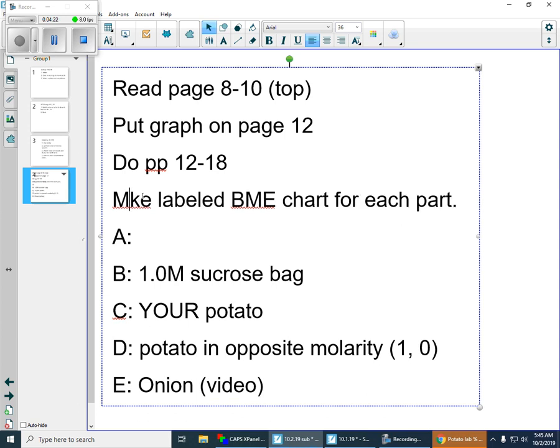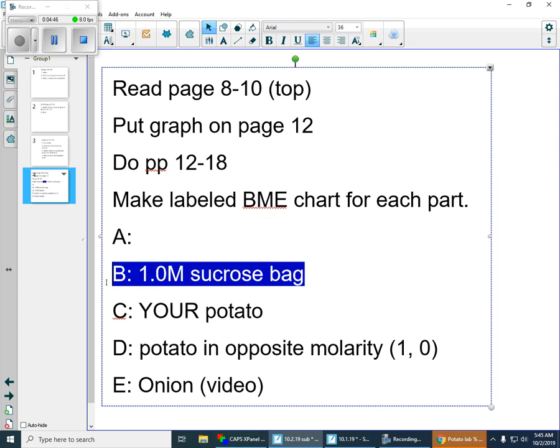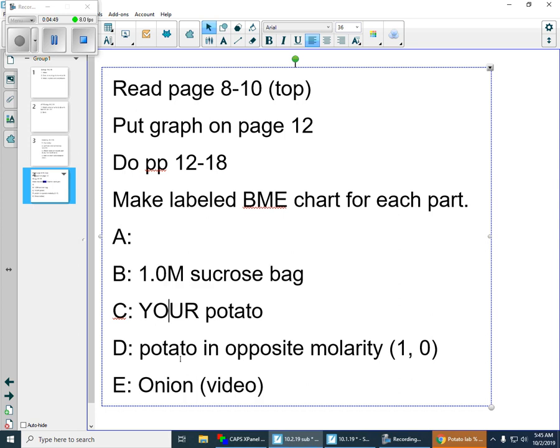This part about making the labeled BME chart for each part, this is what we did earlier when we did lab part A and I had the bag and I drew what was inside and what was outside. It's a beginning, middle, end chart. The middle chart would have arrows showing the movement of particles. So, what you're going to do in your notebook, if you get this far, and you probably won't today, is you're going to do it for each of these things.